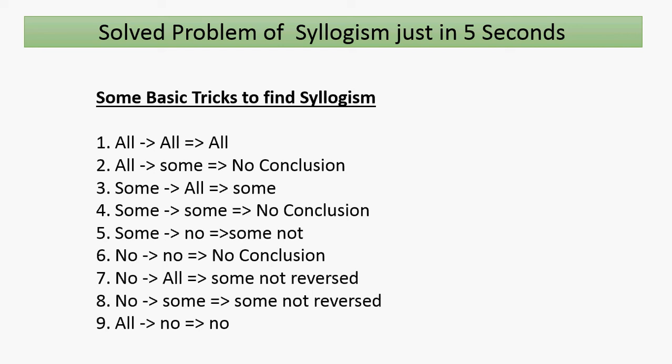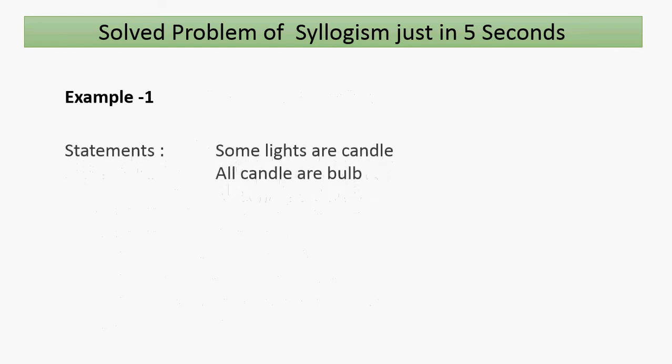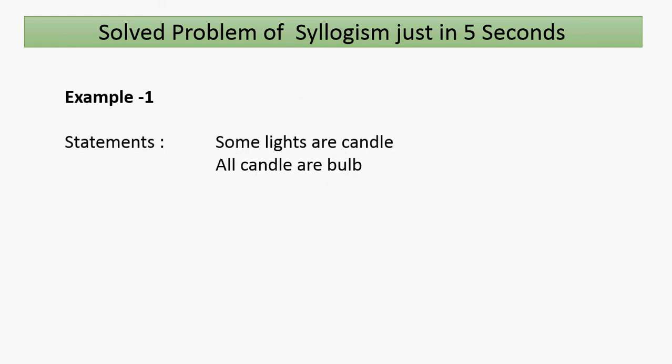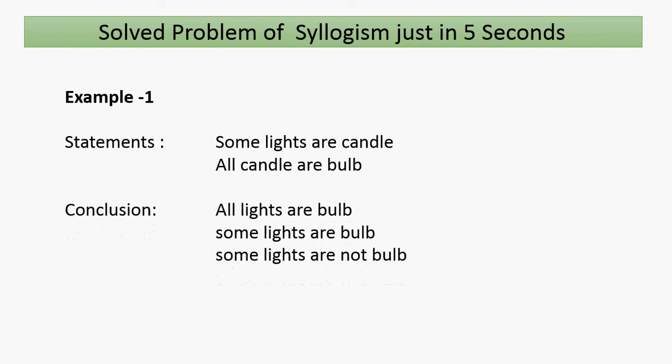Let's see some examples using these rules. There are two statements given. First statement: 'Some lights are candle.' Second statement: 'All candle are burnt.' There are three conclusions given: first, 'All lights are burnt'; second, 'Some lights are burnt'; third, 'Some lights are not burnt.'